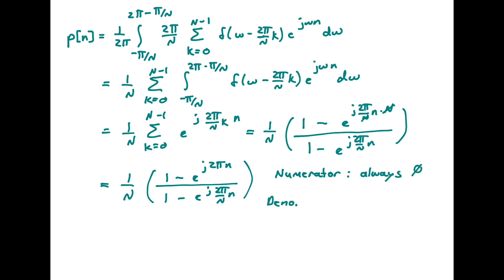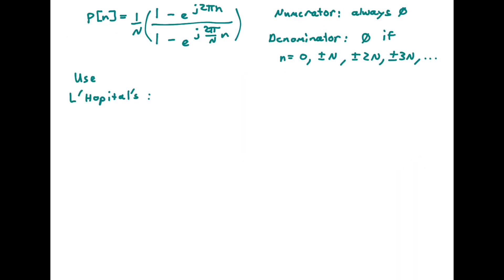We must examine the denominator carefully. The denominator is non-zero except when little n is a multiple of big N — that is, when n = 0, ±N, ±2N, ±3N, etc. At those points we encounter an indeterminate 0/0 form, so we need to use L'Hôpital's rule to evaluate what this expression equals at those points.